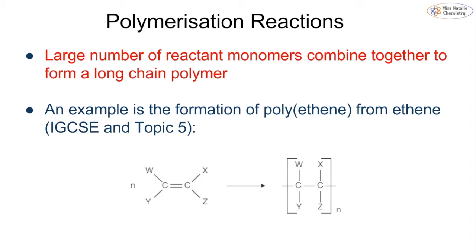We also have polymerization reactions, which you met back in IGCSE and covered in topic 5. This is where we have a long chain of reactant monomers—a monomer meaning a one unit substance—combining to form this long chain polymer, polymer meaning many units. An example is the formation of polyethene from ethene.